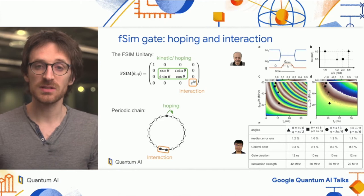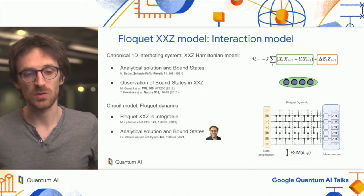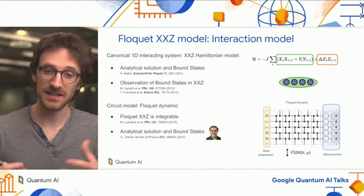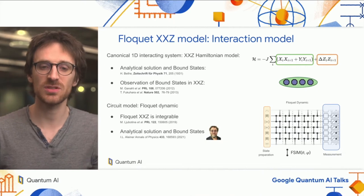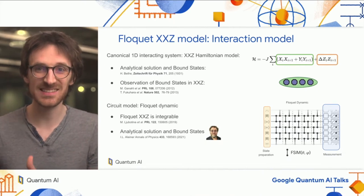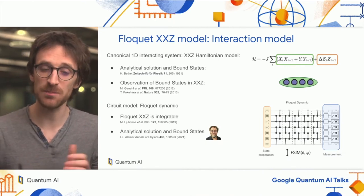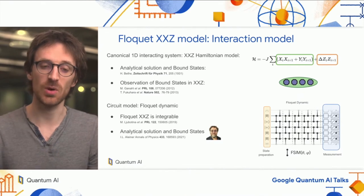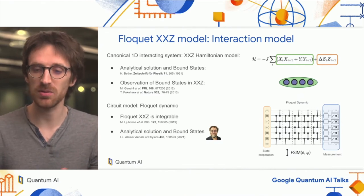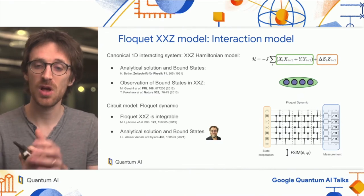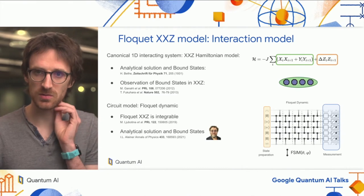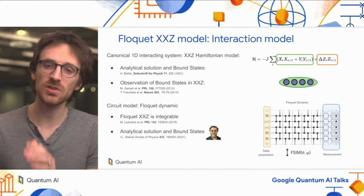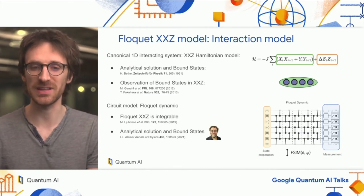Using this tool, what we want to do is the XXZ model, which is a canonical example of an interacting system in 1D. The Hamiltonian has two types of terms: the first in green corresponds to hopping or kinetic energy, and the second corresponds to interaction.